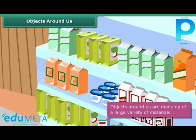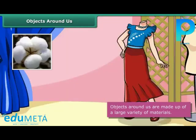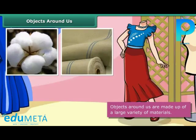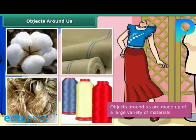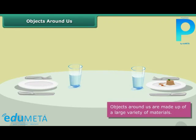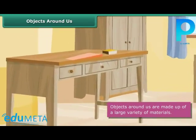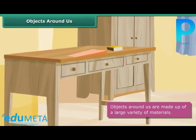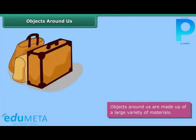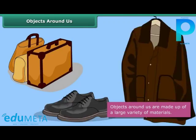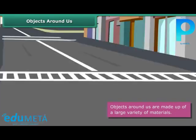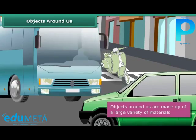All objects are made of one or more materials. Clothes are designed from cotton, linen, jute, nylon, etc. We use glass, stainless steel, or plastic crockery in our homes. Furniture is made of wood, plastic, or even iron and stone. Leather, plastic, rexin, or jute is used to make bags, shoes, and jackets.